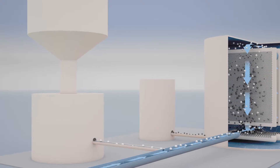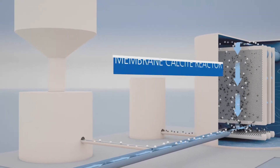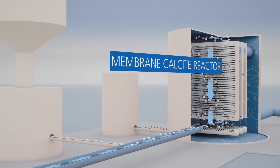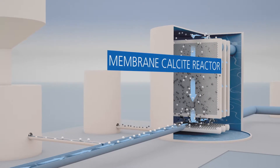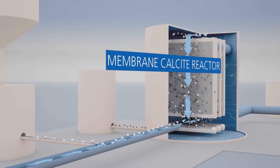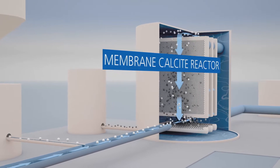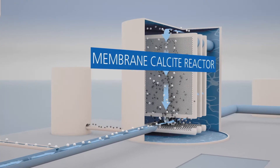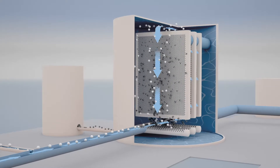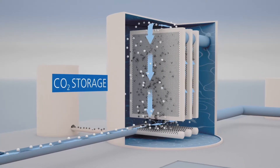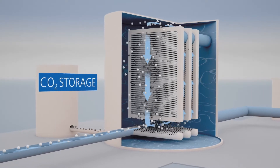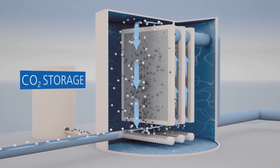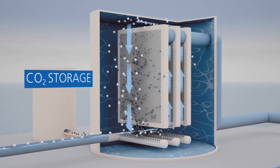The next step and key to the process is the Membrane Calcite Reactor — a combined calcite dissolution reactor and filtration system featuring a robust, low-maintenance microfiltration membrane coming with Omya's lifetime warranty. Carbon dioxide is added through a blower into the membrane calcite reactor, where it is intensely mixed with the calcium carbonate suspension.